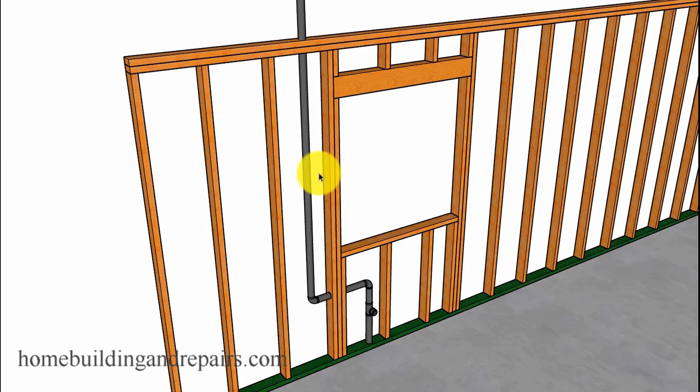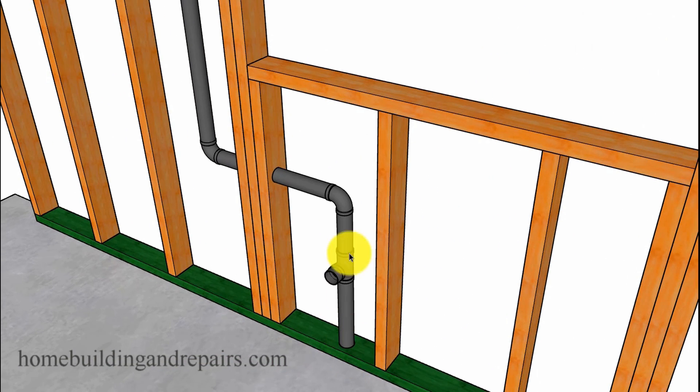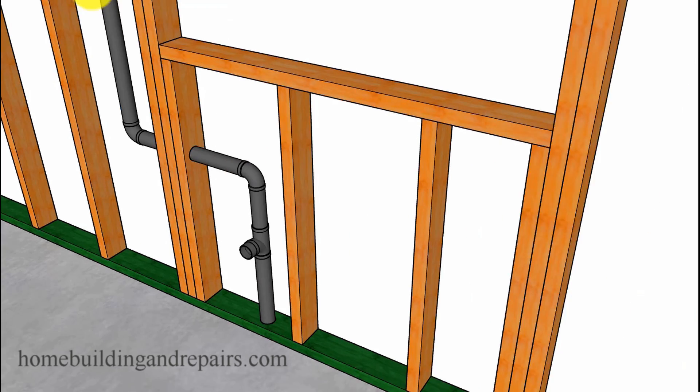So here's what the vent might look like if you drill through the king stud. Pipe coming up here, this is going to be the drain coming out for the sink and then the vent coming up here. This would be an inch and a half pipe.